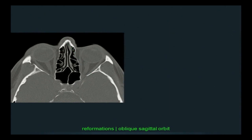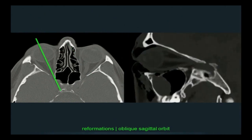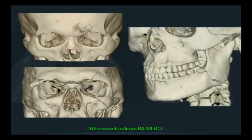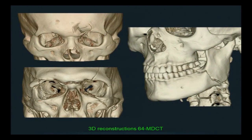For the orbits, I like to do the oblique sagittal when there are fractures involving the orbital floor or roof, so they can see on a pure sagittal the globe and the involvement of the rectus muscles and the optic nerve. And of course, 3D reconstructions really put together the big picture for the surgeons — a global, seeing-the-forest-for-the-trees sort of image.